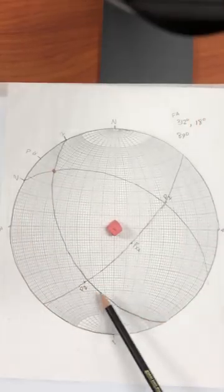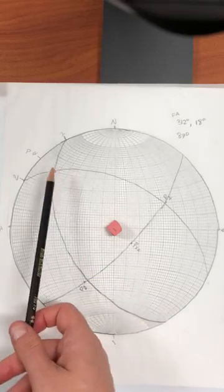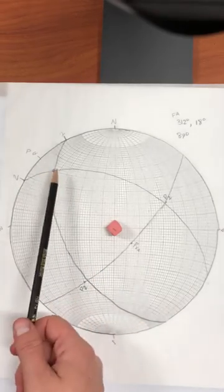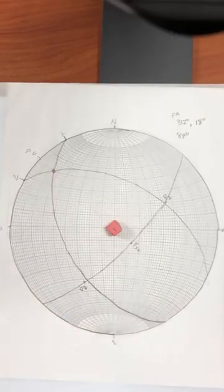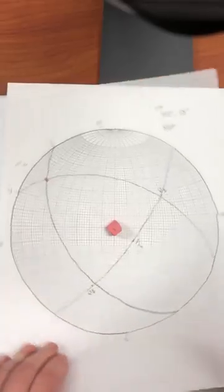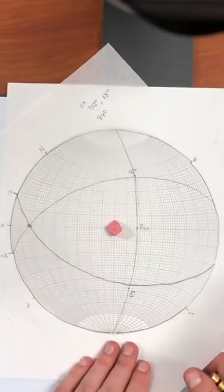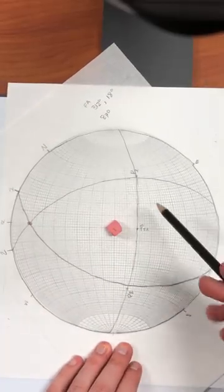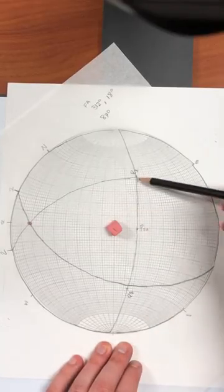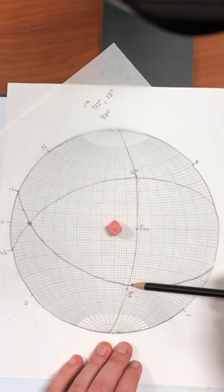We plotted the point that was 90 degrees from the fold axis. And when we took those three points, we found that they lied along one plane in space. And that plane was great because it allowed us to look at our fold straight on and it gave us the right spot to count our interlimb angle.